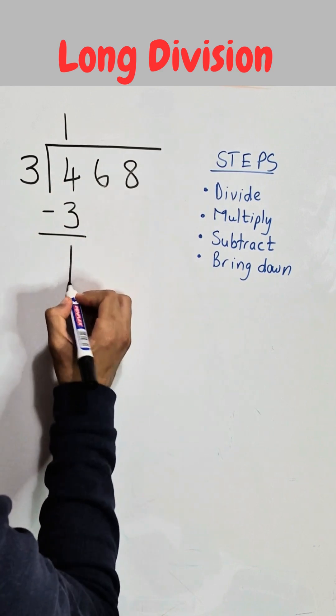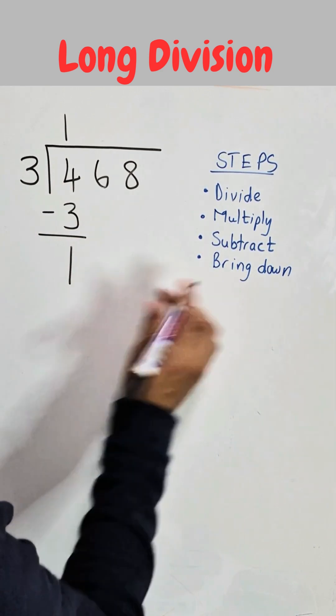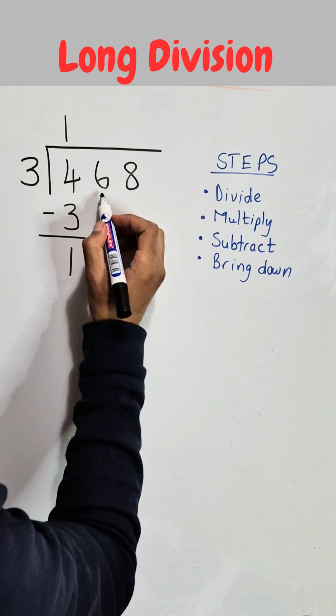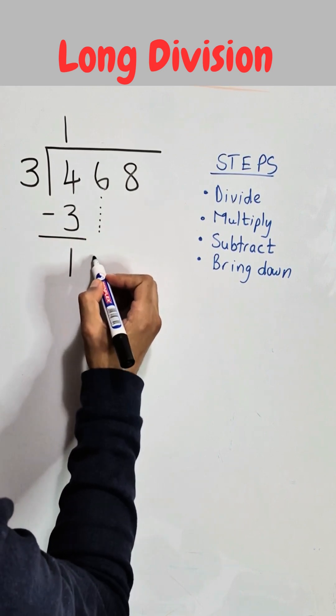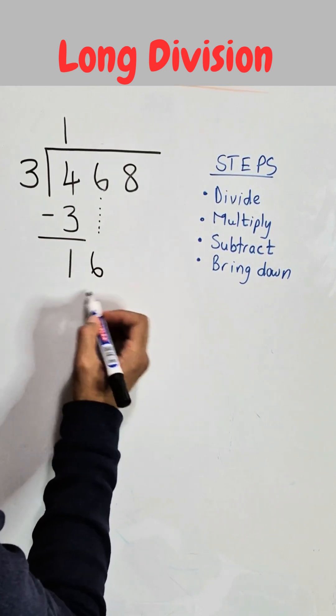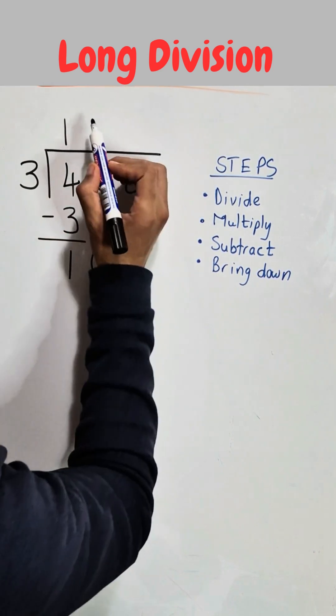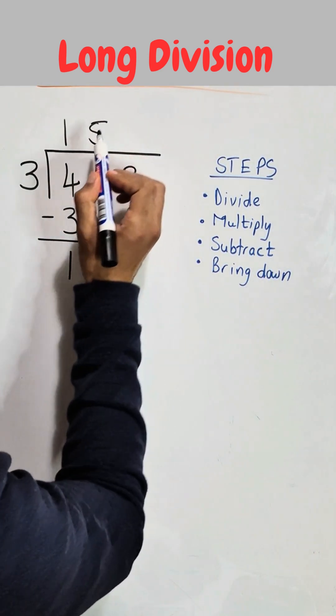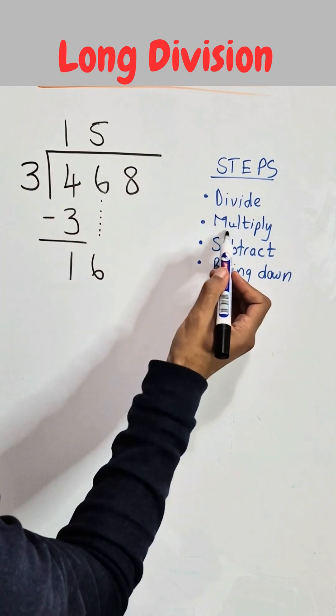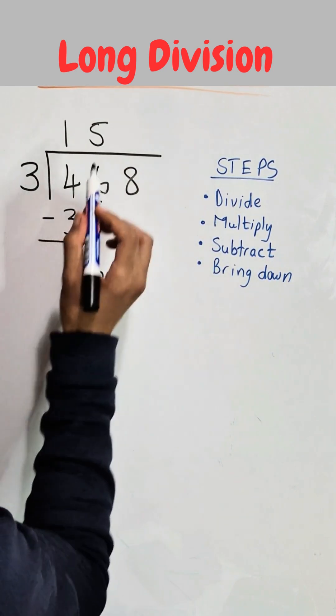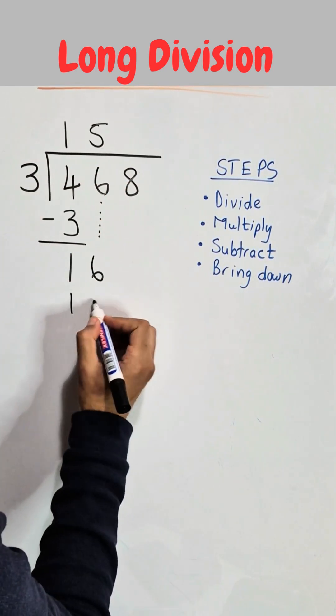So 4 minus 3 is equal to 1 and the next step is to bring down the next number which is number 6. So we bring down 6 and that will make this number 16. Now 3 goes into 16 5 times. So that 5 we'll place here on top. That 5 we need to multiply by the divisor and 5 multiplied by 3 is 15.